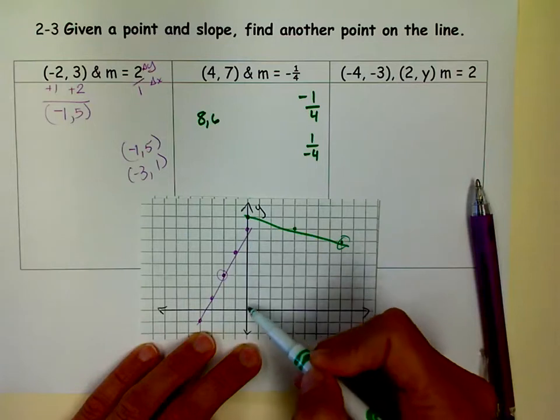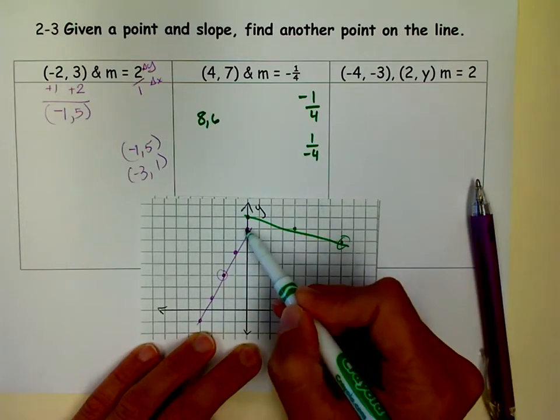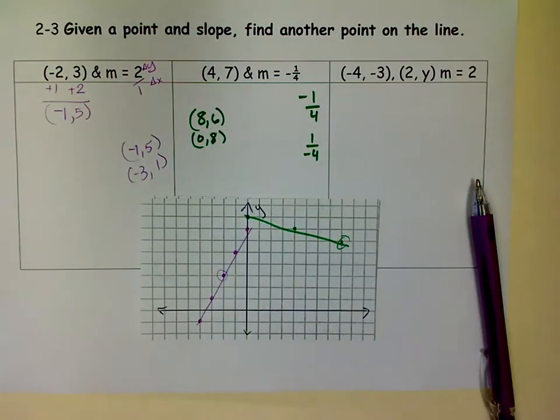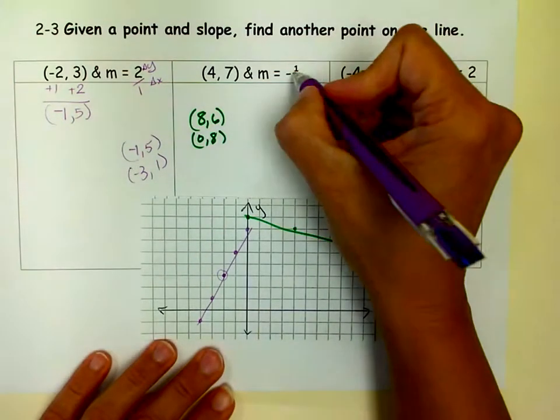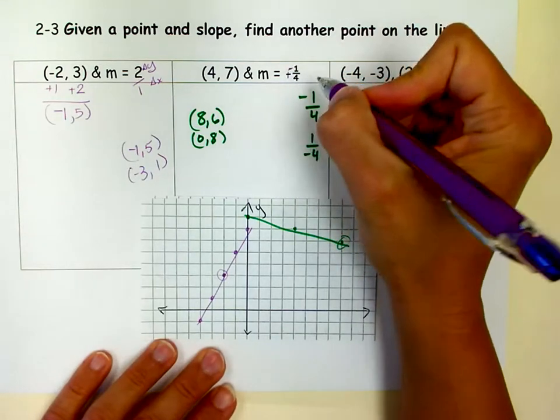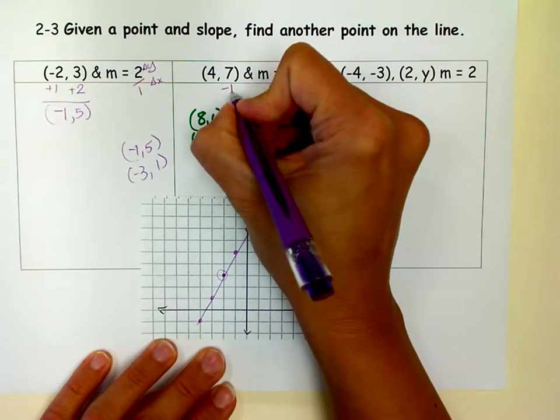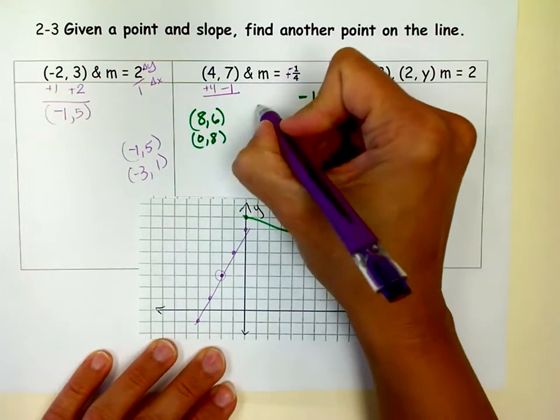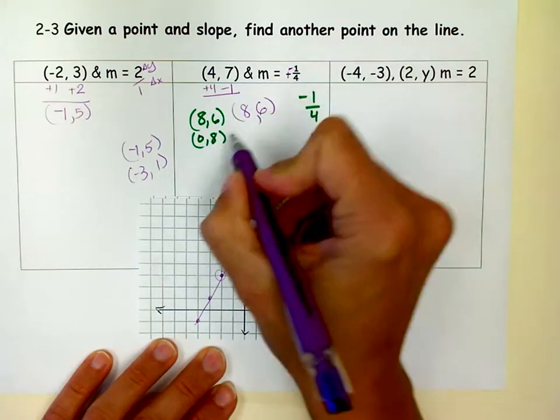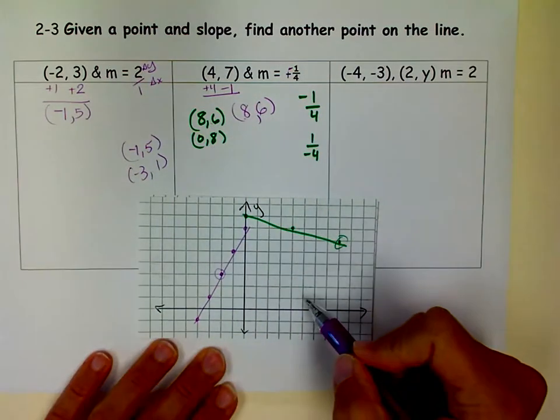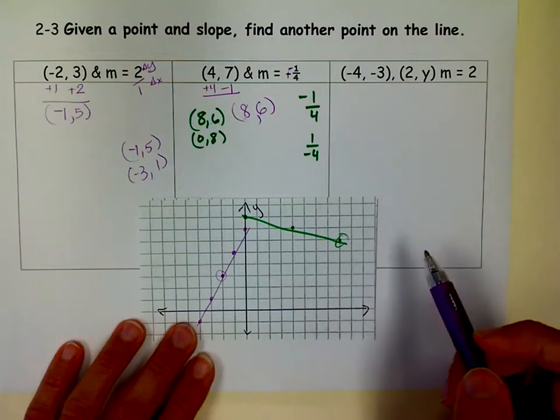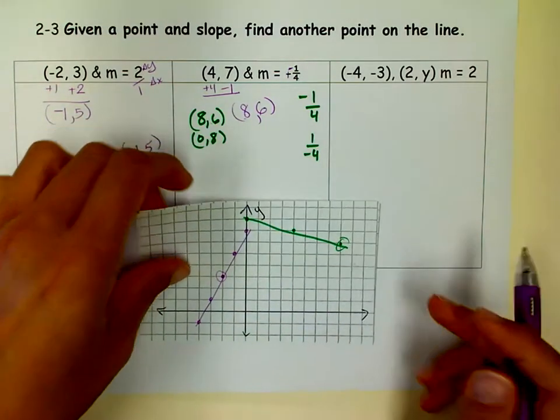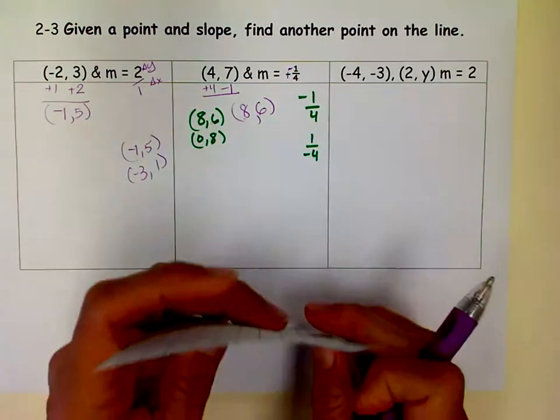And also 0, 8 works. Let me show you a way to do it without the graph paper. Again, I have to choose a negative, so I'll just put it on the top. That means for y I'm going to minus 1, and for x I'm going to add 4. And when I do that, 7 minus 1 is 6, 4 plus 4 is 8. And you'll notice that I got the same point on the graph too. That's good that we got that, because it is the same. So either way, you can graph it, or you can use the slope.